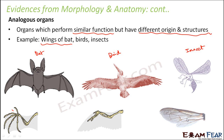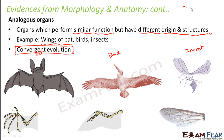The internal structure also doesn't share any similarities between bat, bird, and insect wings. So the structure and origin of the wings are very different, but all of them perform the same function. This corresponds to convergent evolution — converging means different things coming to meet at one point. Here, all these organisms have different structures and different origins, but they end up doing the same job. That shared function is the convergence point.